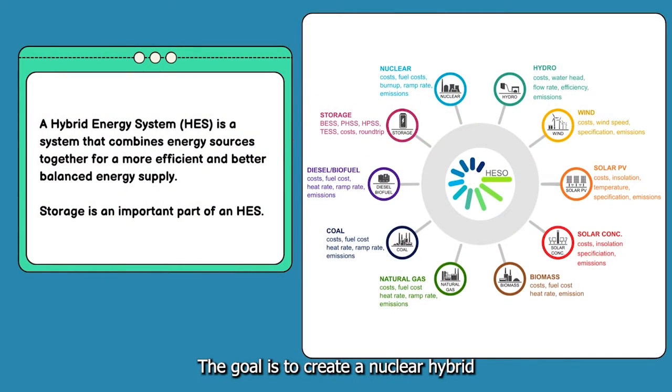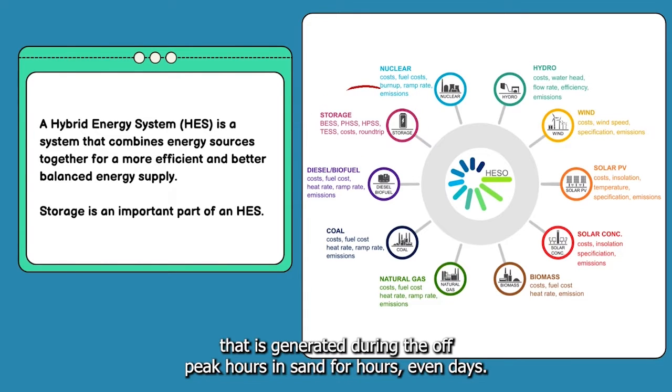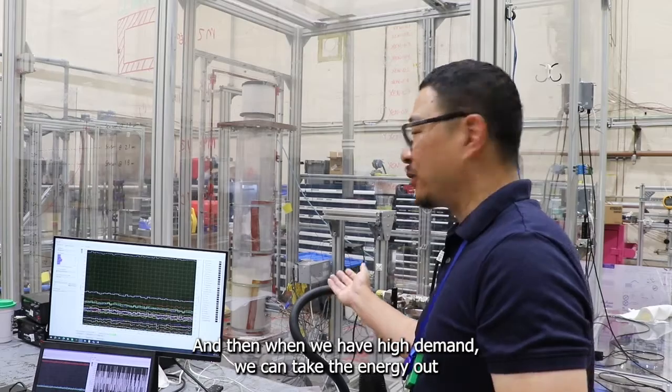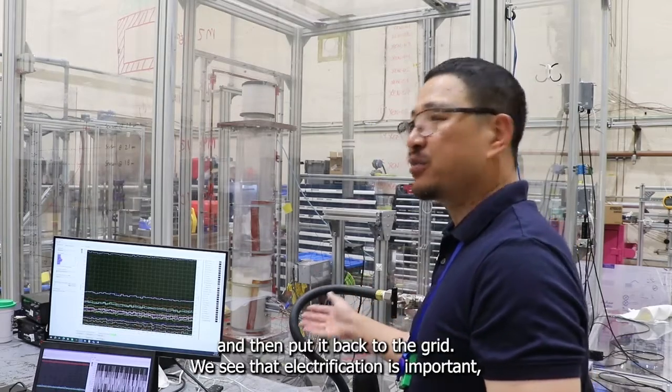The goal is to create a nuclear hybrid energy system where we can store some of the heat that is generated during off-peak hours in sand for hours, even days. And then when we have high demand, we can take the energy out and put it back to the grid.